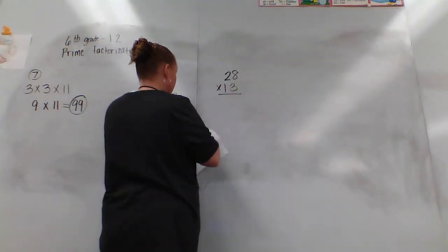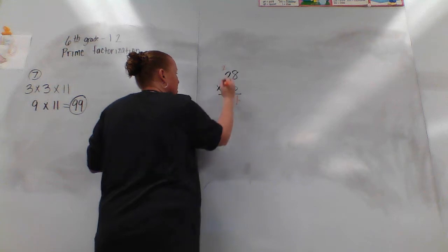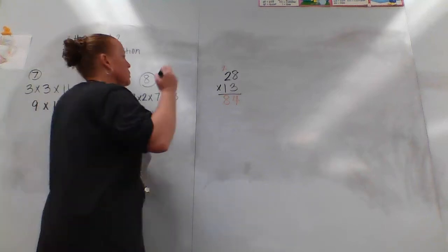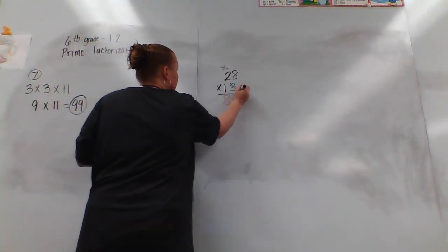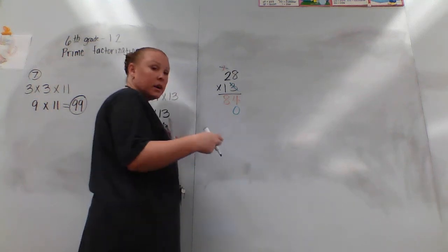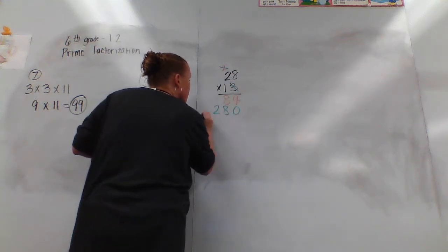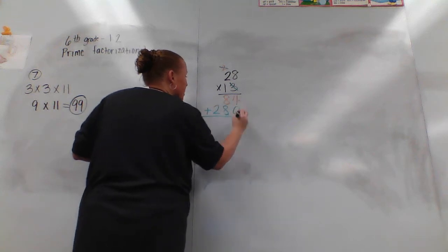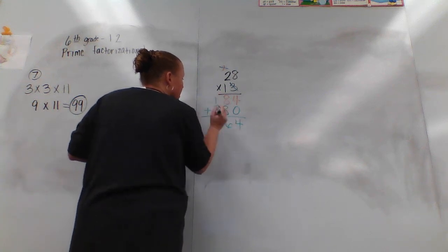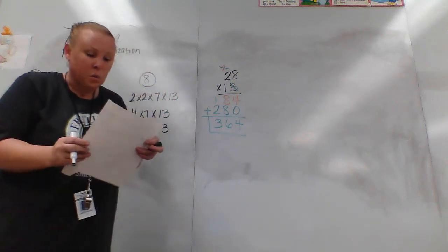3 times 8 is 24. 3 times 2 is 6, plus 2 more is 8. Now, to get another color — we're going to do tick-tack-toe, which helps us remember we need a placeholder zero for our second row. So 1 times 8 and 1 times 2: 8, 2. Add them up: 4 plus 0 is 4, 8 plus 8 is 16, 1 plus 2 is 3. Your whole answer is 364.